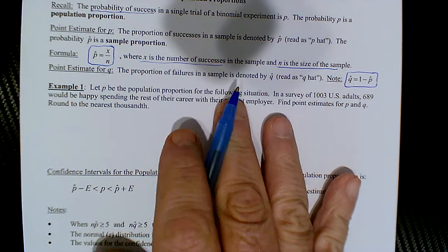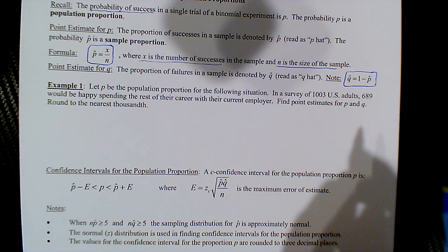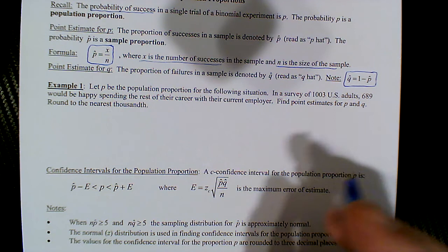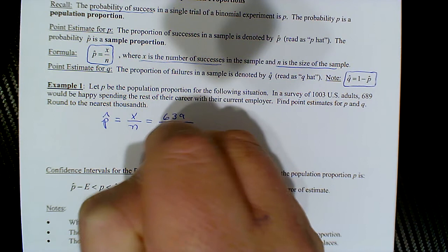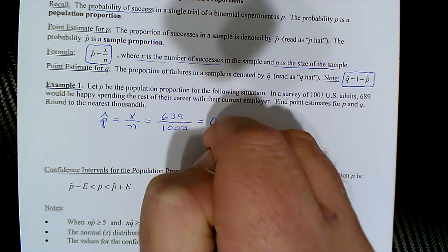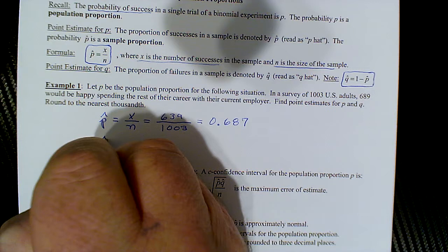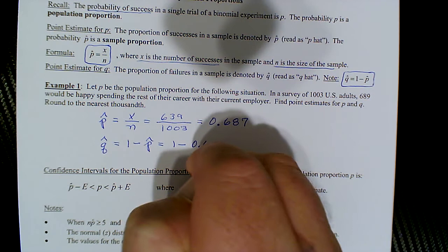Let p be the population proportion. For a survey of 1003 adults where 689 would be happy spending the rest of their career with their current employer, find the point estimate for p and q. P-hat is x over n, so 689 over 1003, which gives us 0.687. Then q-hat is 1 minus 0.687, which is 0.313.